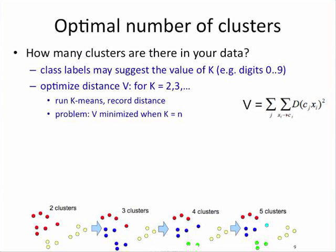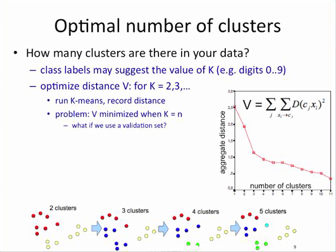So the problem is that this is going to be optimized when k is equal to n, the number of instances in your data set. Can anyone see why? When you have as many clusters as data points, each centroid will happily migrate to its own individual data point. So each data point will end up in its own little cluster, and the distance from the data point to a cluster is going to be zero. And you can't do better than zero when you're looking for variance.